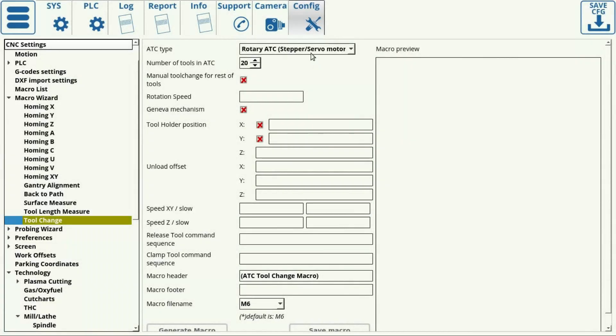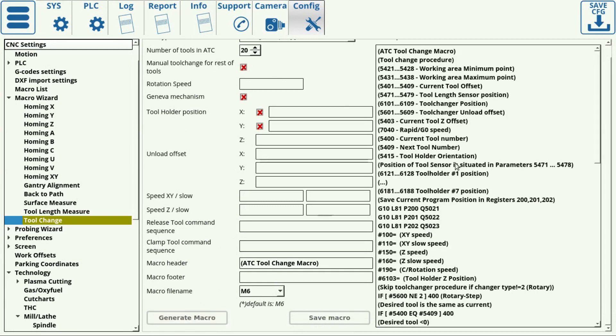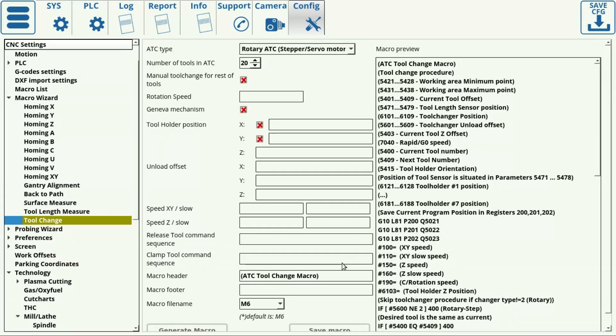The code for the tool changes can be found in the M6 macro. The M6 macro is generated through the built-in MyCNC macro wizard, which can be found in the MyCNC settings.